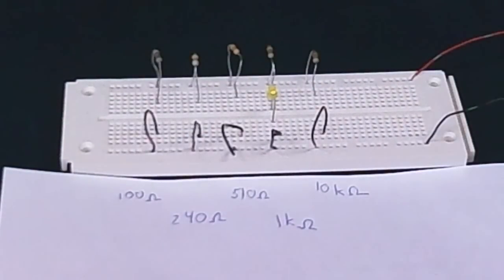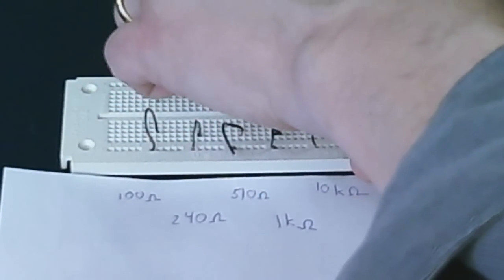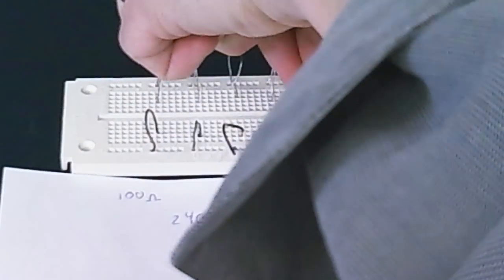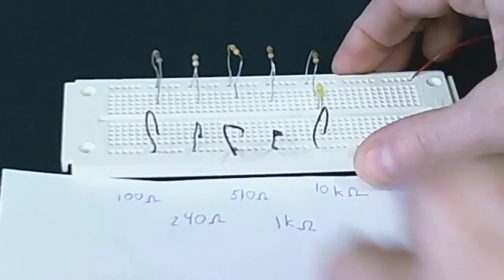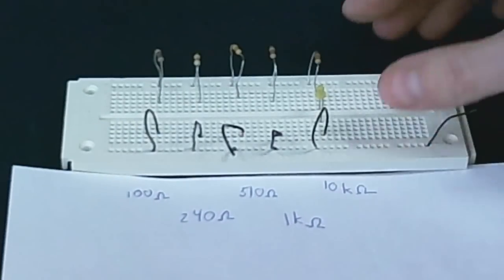You'll notice with this one, it's a little dimmer with all of those. So even at 1 kiloohm, it's not too bright. And again, at 10 kiloohms, it's pretty much impossible to see.